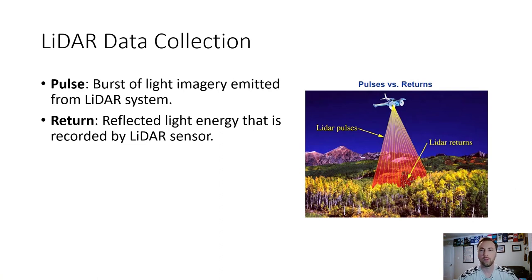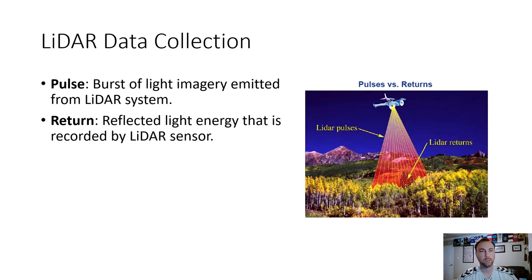Data collection comes down to two keywords: pulses and returns. The pulse is the burst of light sent out from the LiDAR system that reflects off the surface. The return is the reflected light energy recorded by the LiDAR sensor, which tells the system how far away the object is. A first return is the very first object the pulse hits; second, third, or fourth returns go deeper — into a tree canopy, hitting a rooftop, or reaching the ground beneath vegetation.